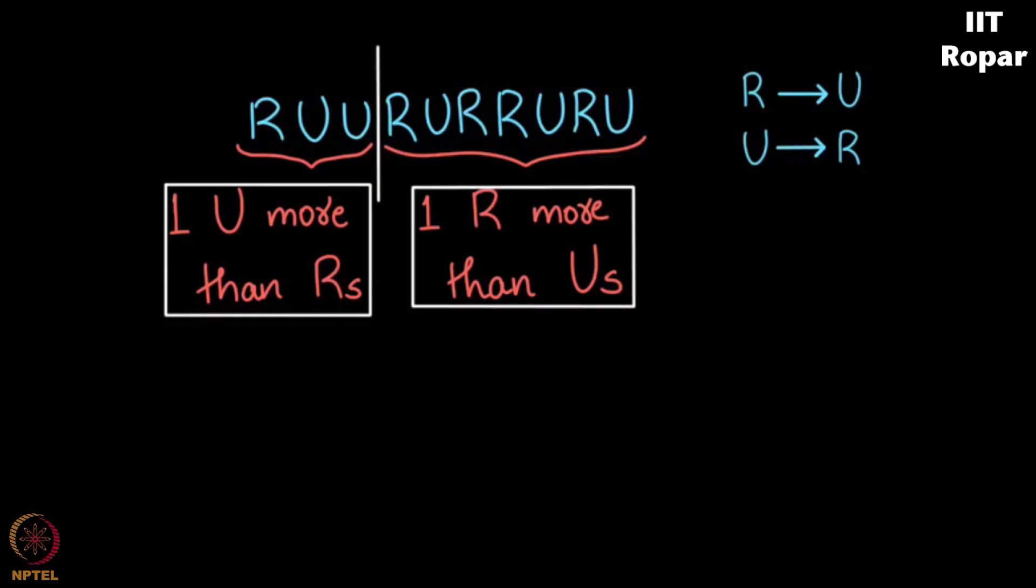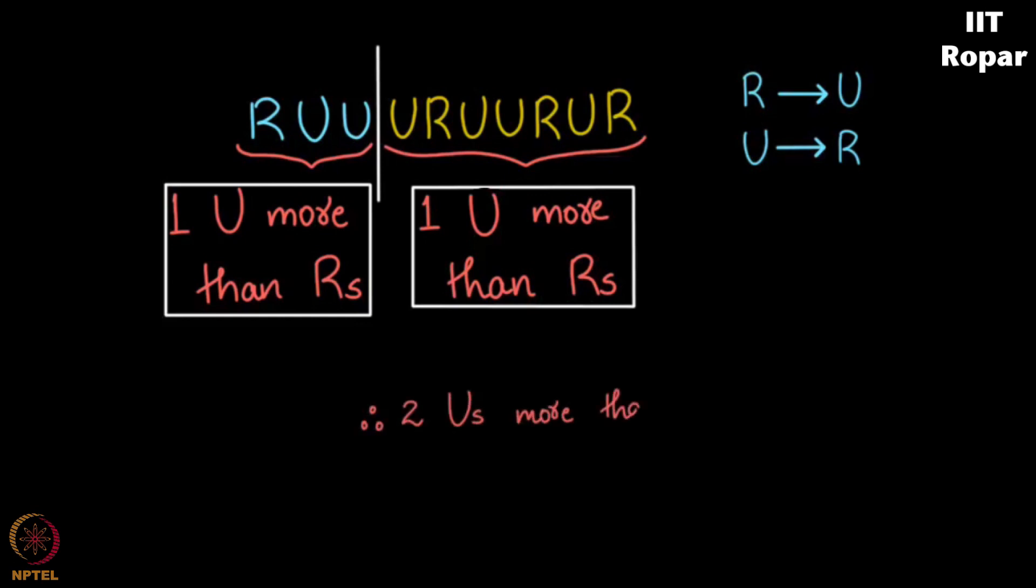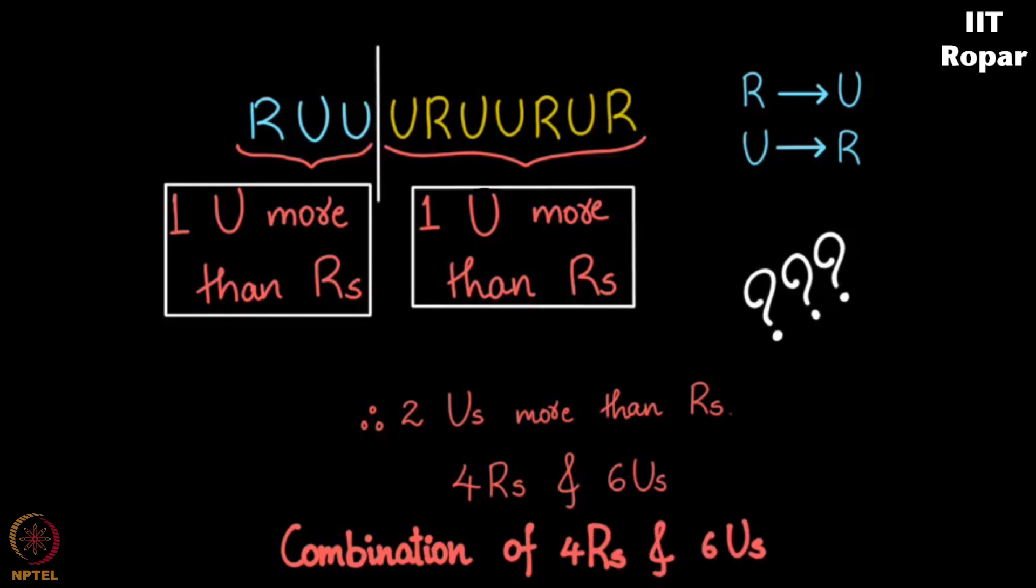What I do is I take the complement of the right side which had one R more than the number of U's. In the complement you will get one U more than the number of R's. On the left side you already had one U more than the number of R's, and the net total right now will be 2 U's more than the number of R's, which means you now have 4 R's and 6 U's. What on earth does this denote? This doesn't denote a wave from (0,0) to (5,5). This simply denotes a combination of 4 R's and 6 U's.